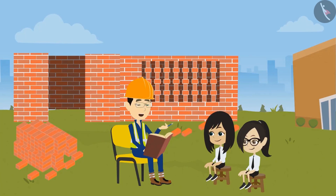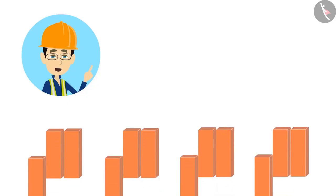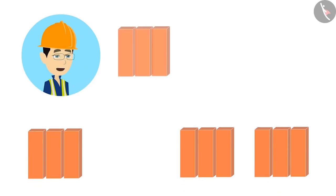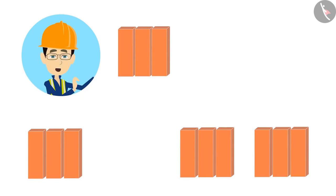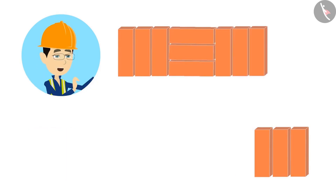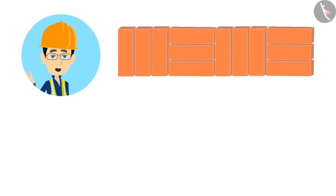Let me make this pattern for you. First, make groups of three bricks. Let's make the first line from these groups. Keep a group in such a way that the bricks are vertical, then keep a different group so that the bricks are horizontal. Once again, a vertical group and a horizontal group.